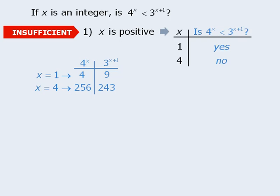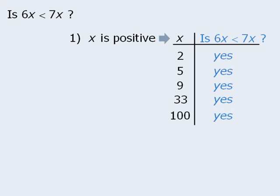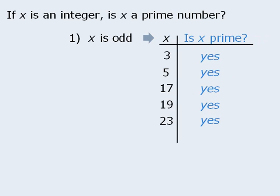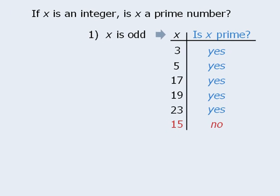However, if the statement you are examining is sufficient, the table method will be inconclusive. For example, the table results here suggest that if x is positive, then 6x will always be less than 7x. But it may very well be the case that we have simply chosen bad numbers. In this example, the table results suggest that if x is odd, then x will always be prime. However, I have done a poor job selecting possible values for x. If I had chosen 15 as a possible value, then the answer would have been no — 15 is not prime — in which case we could conclude with certainty that statement 1 is not sufficient.